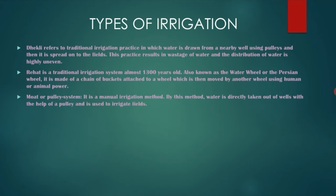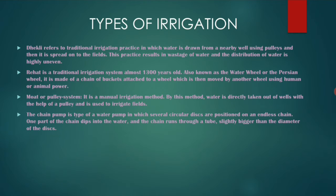Next is the Moat or pulley system. It is based on a pulley system, and a moat is a deep wide ditch filled with water around the walls. Next is the chain pump, which is based on pumps. It consists of a pipe connected to a water supply and a circular chain with flat platters. These platters are connected to the main chain, drawn up through the pipe, catching water and bringing it to the surface.